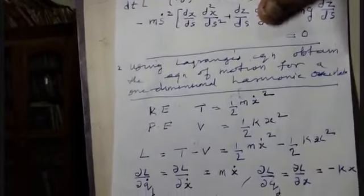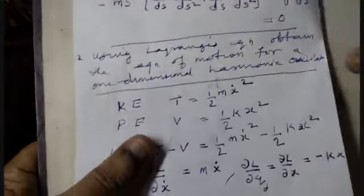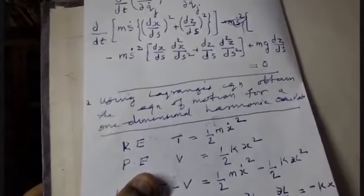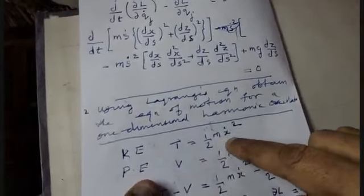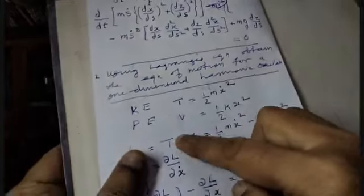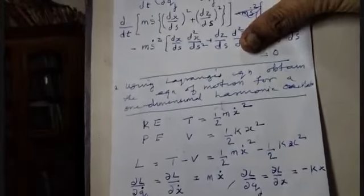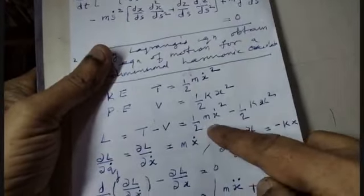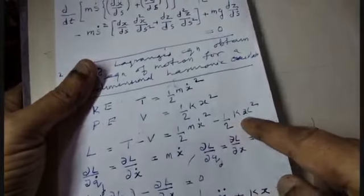For the simple harmonic oscillator, the generalized coordinate is x, so qj equals x and qj-dot equals x-dot. The kinetic energy is T equals one-half m x-dot², where v equals dx/dt. The potential energy is V equals one-half k x². Therefore, the Lagrangian is L equals T minus V equals one-half m x-dot² minus one-half k x².